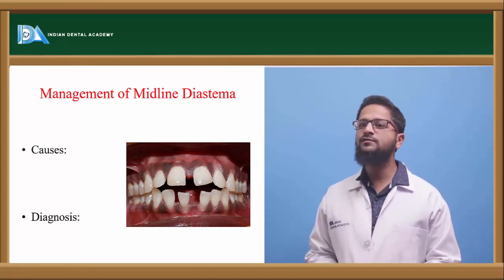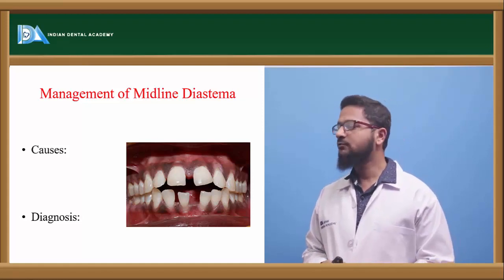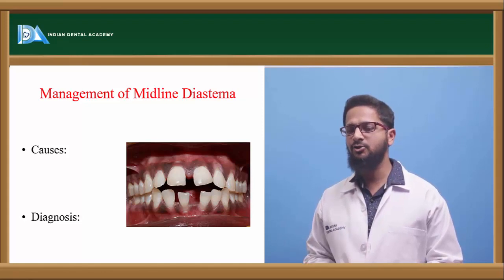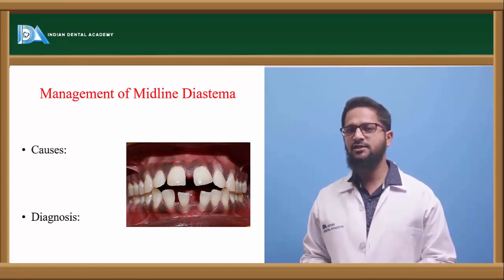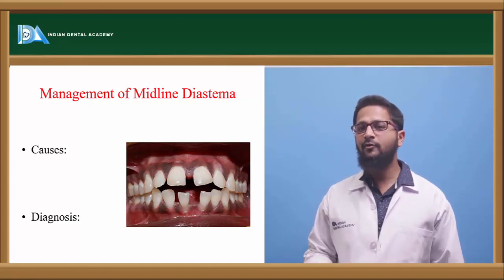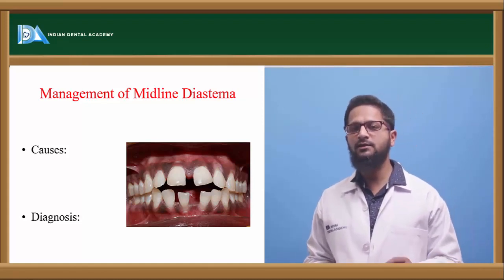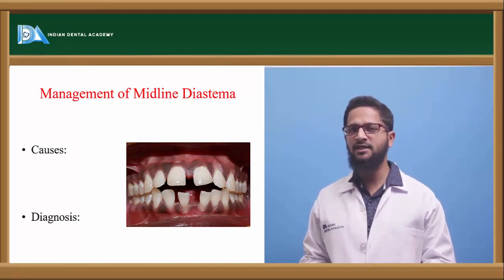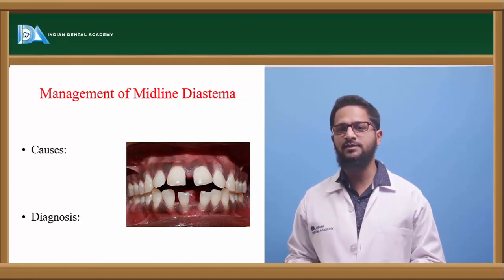What are the various causes for the occurrence of midline diastema? First, most commonly it occurs because of transient malocclusion, that is self-correcting malocclusion. We usually see during the deciduous dentition that spacing is generally present. This is a positive sign because permanent teeth diameter is usually larger when compared to deciduous teeth diameter. So physiological spaces are considered to be good to be present.